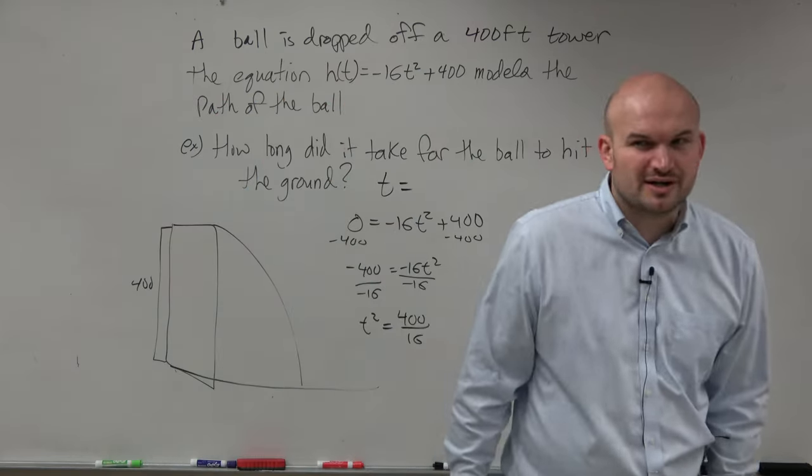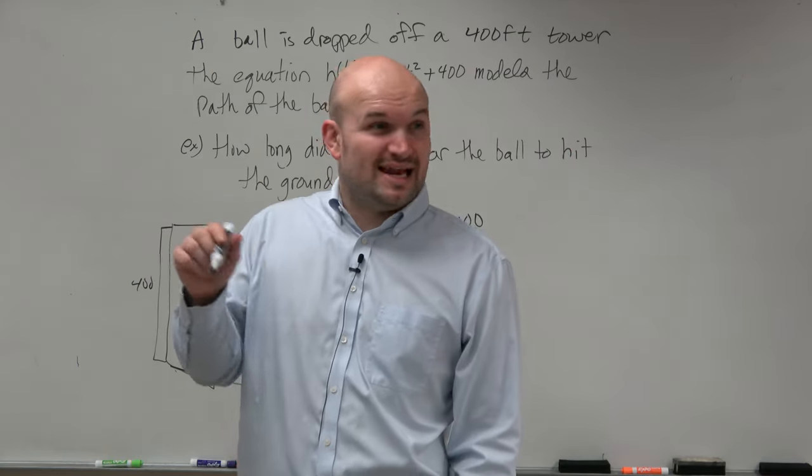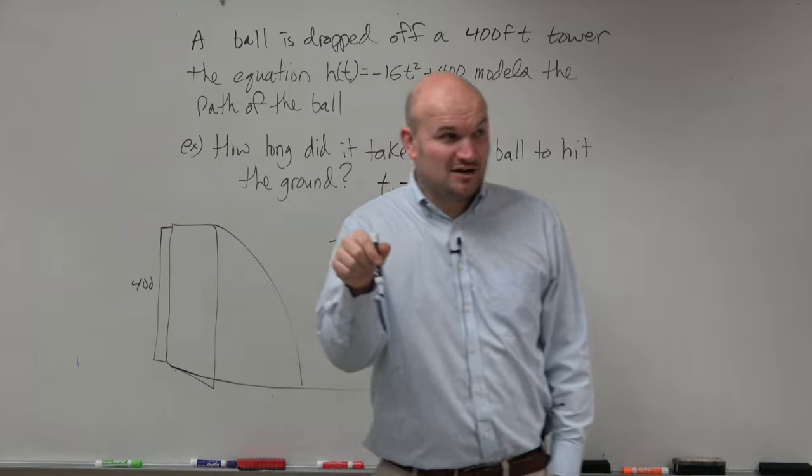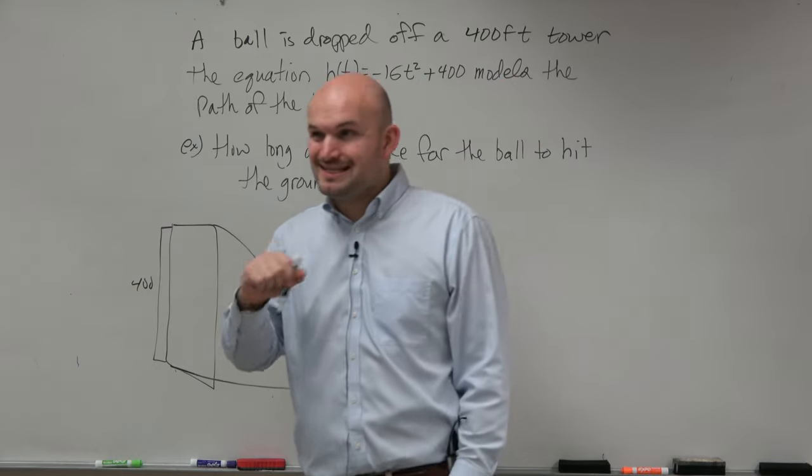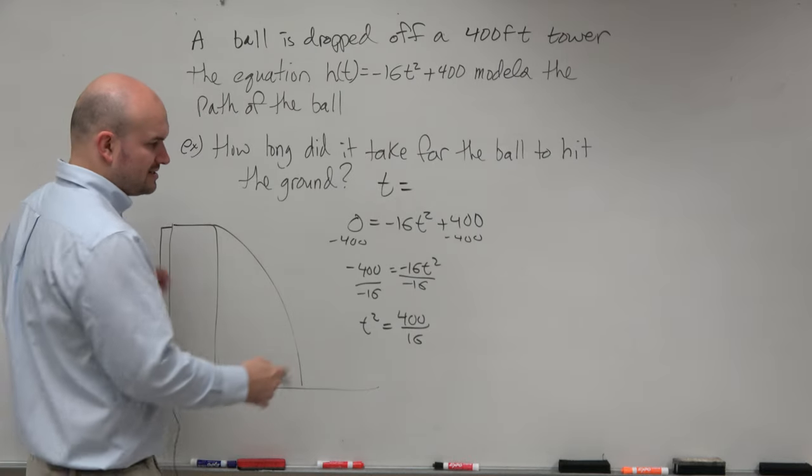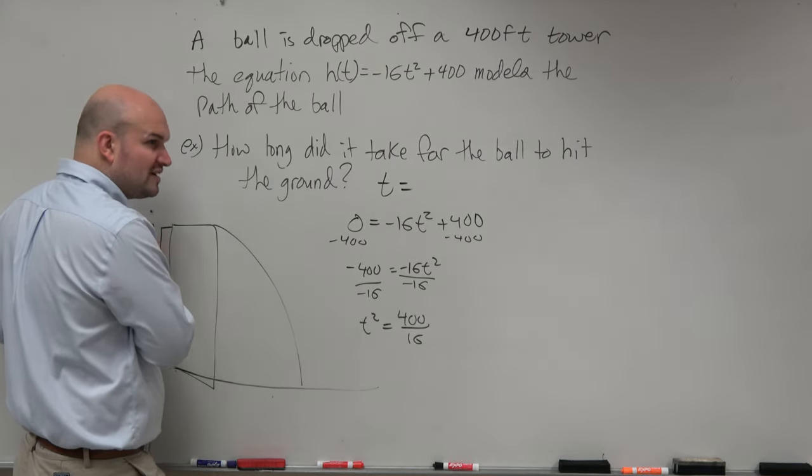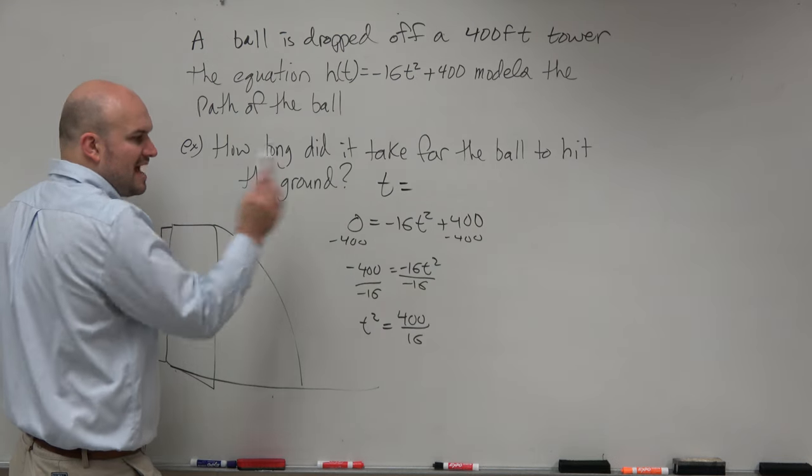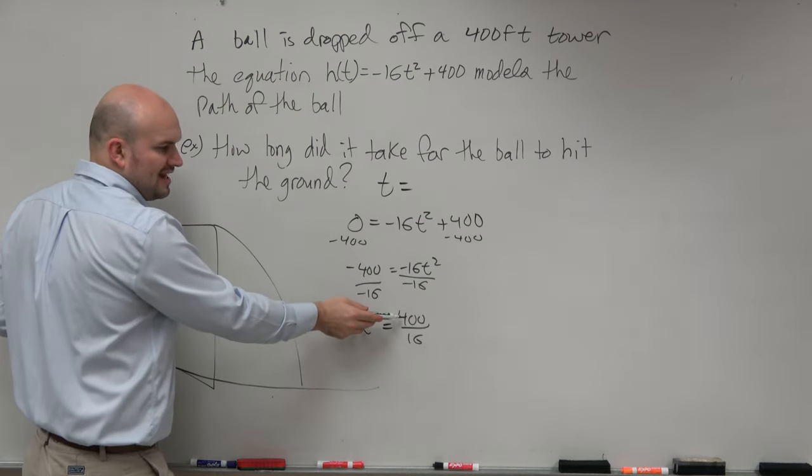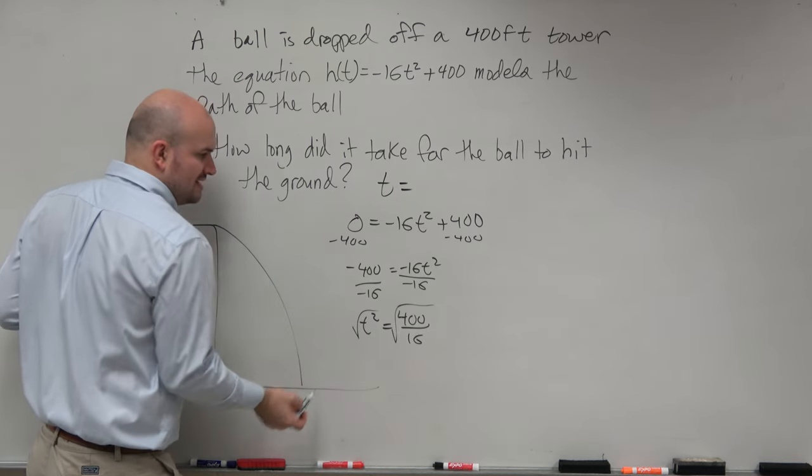So I can write this as t squared equals 400 over 16. Don't try to divide 16 into 400. There were a lot of you guys that got things wrong on that related rates. Remember that I didn't have the calculator for it. A lot of you guys messed things up. Try to keep things simplified. Don't try to overdo things. Because guys, rather than trying to divide 16 into 400, which we could figure out, right, we could do some math to the side. But notice, guys, these are both square numbers.